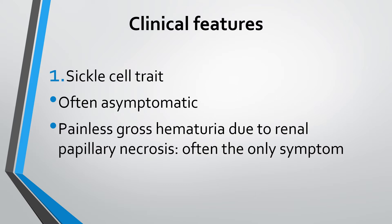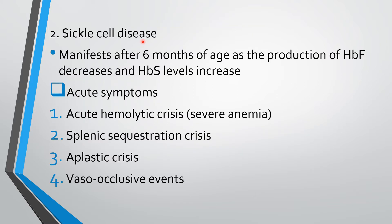Coming to the second set of clinical manifestations — what happens in children with sickle cell disease. Sickle cell trait is different from sickle cell disease. In sickle cell disease, children will start to manifest symptoms after 6 months of age. Before 6 months, there is enough HbF to maintain hemoglobin levels. But after 6 months, hemoglobin F decreases and hemoglobin S (sickle hemoglobin) increases, so the child begins to demonstrate symptoms.